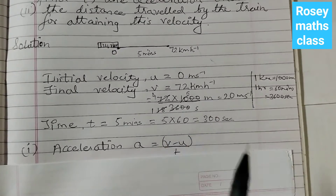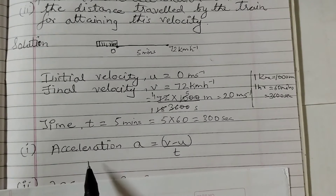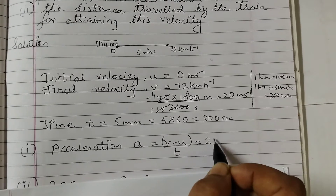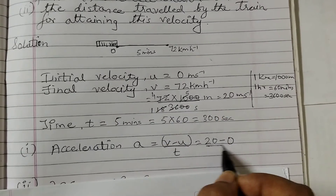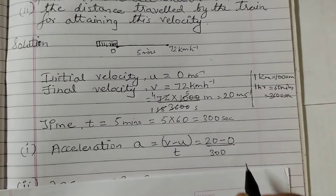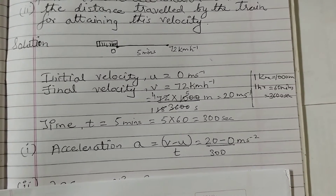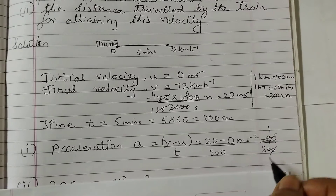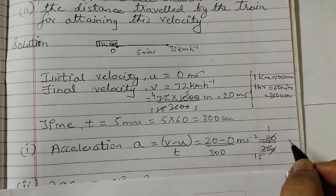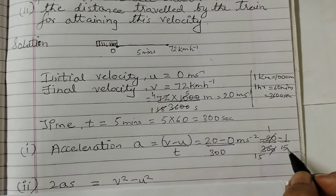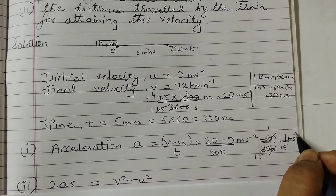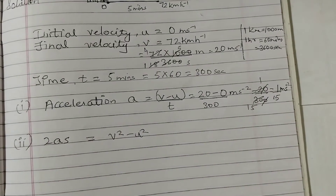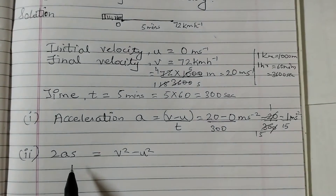Now we will use the formula: acceleration a is equal to final velocity v minus initial velocity u, divided by t. So a equals 20 minus 0, divided by 300, and the unit is meters per second squared. Simplifying 20 over 300: cancelling gives us 1 over 15. So the acceleration is 1/15 meters per second squared.